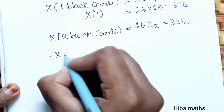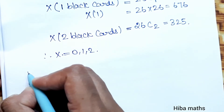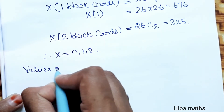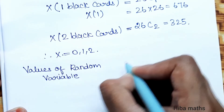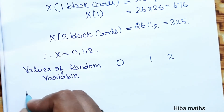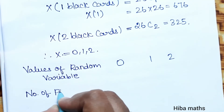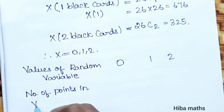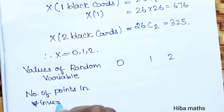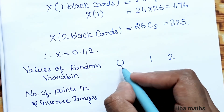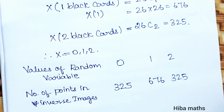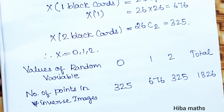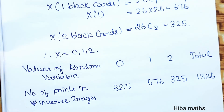Therefore, we can write the table of values. The values of the random variable x are 0, 1, 2. The number of points in the inverse image for x = 0 is 325, for x = 1 is 676, and for x = 2 is 325.